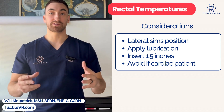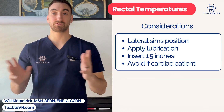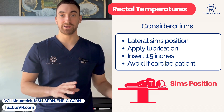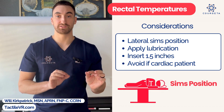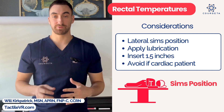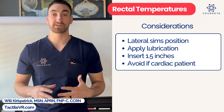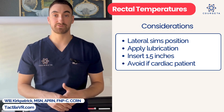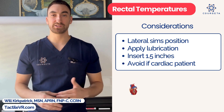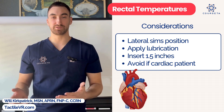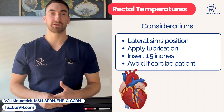For rectal temperature, position the patient in the lateral Sims position on their left side. Apply lubrication and insert 1.5 inches into the rectum, then allow the temperature probe to gather the reading. Nursing considerations and contraindications: a cardiac patient is contraindicated for a rectal temperature because inserting a rectal probe may cause a vagal response, which rapidly decreases the heart rate.